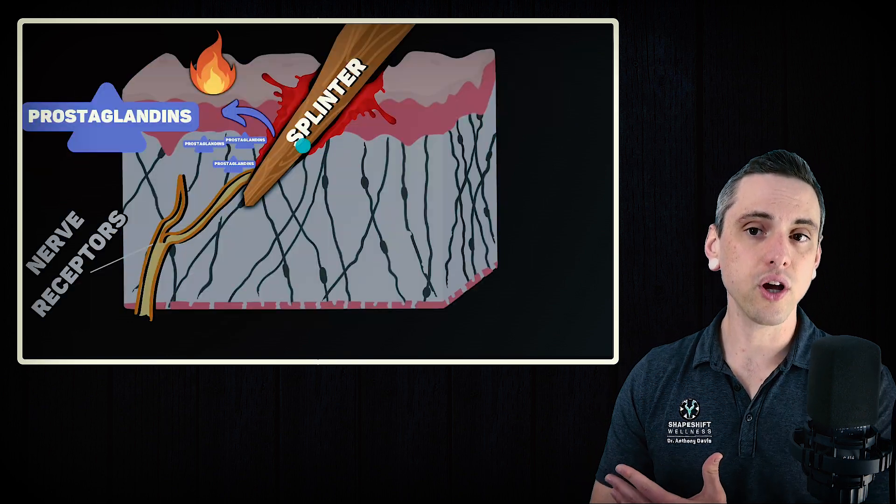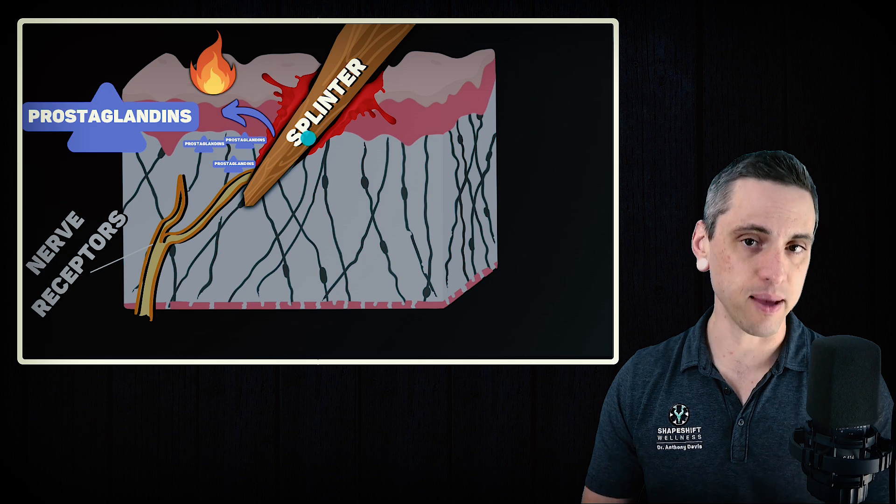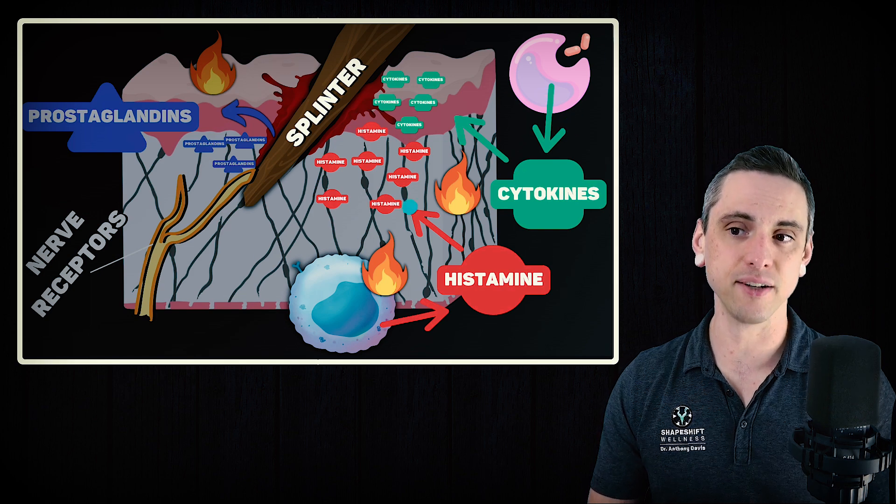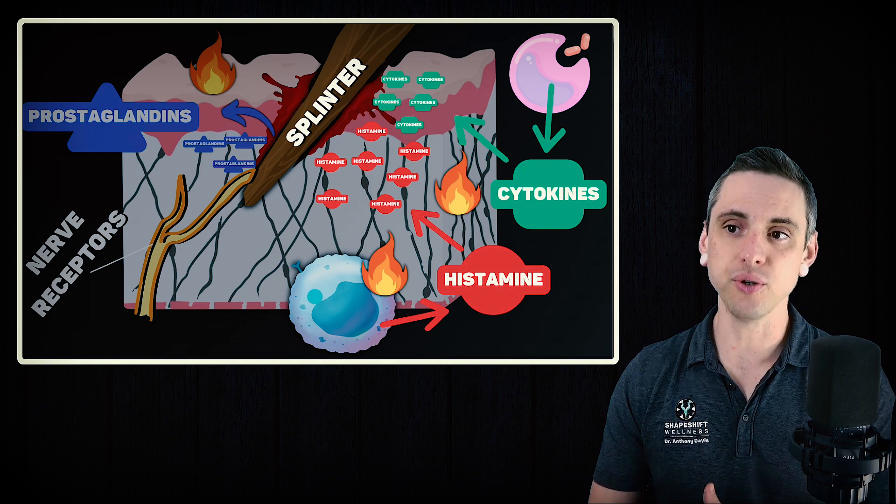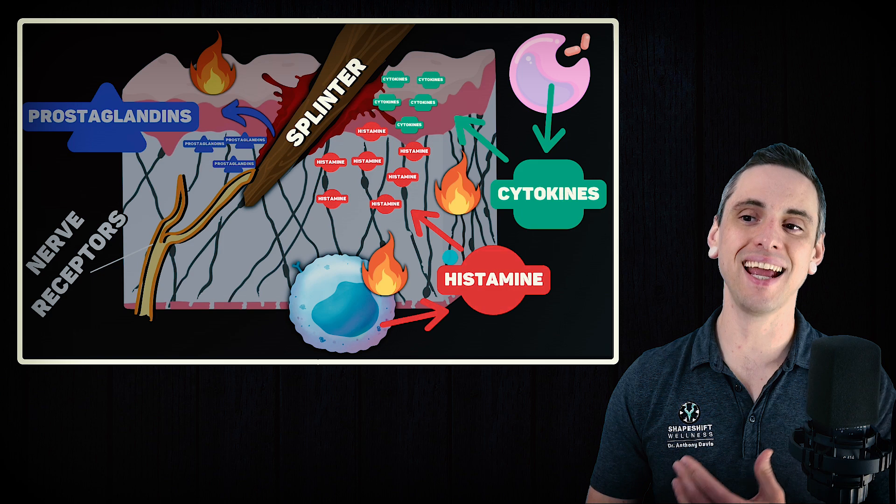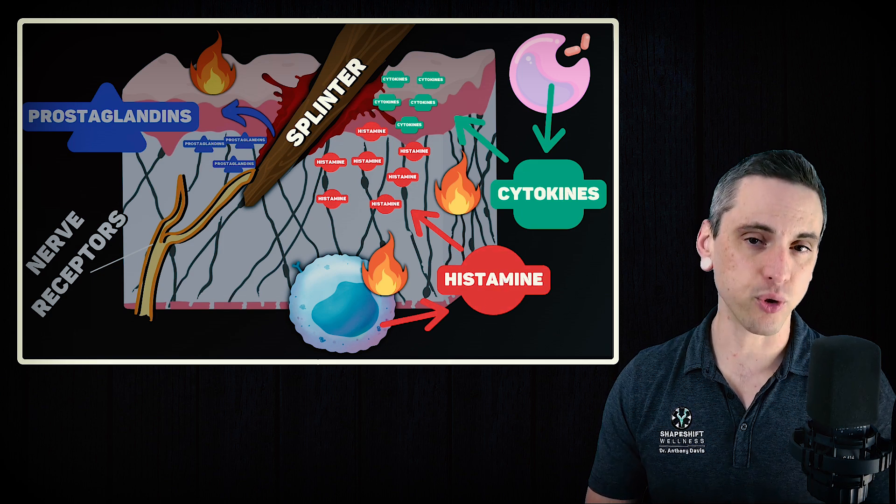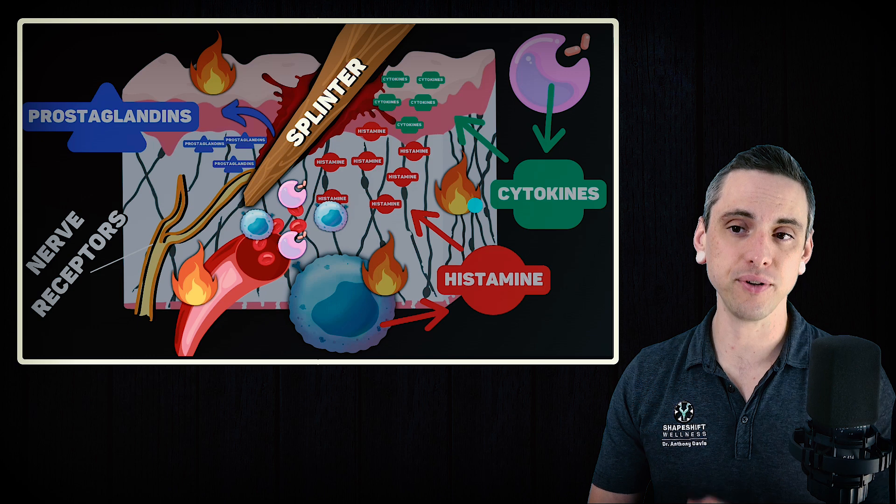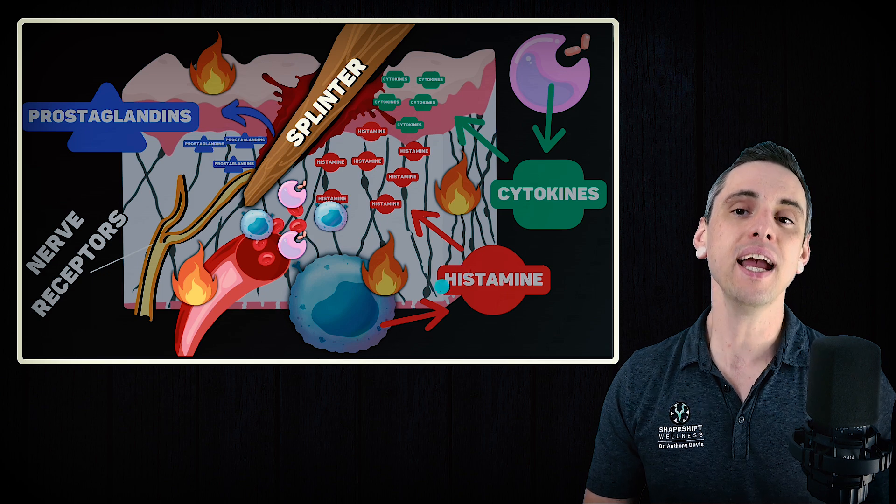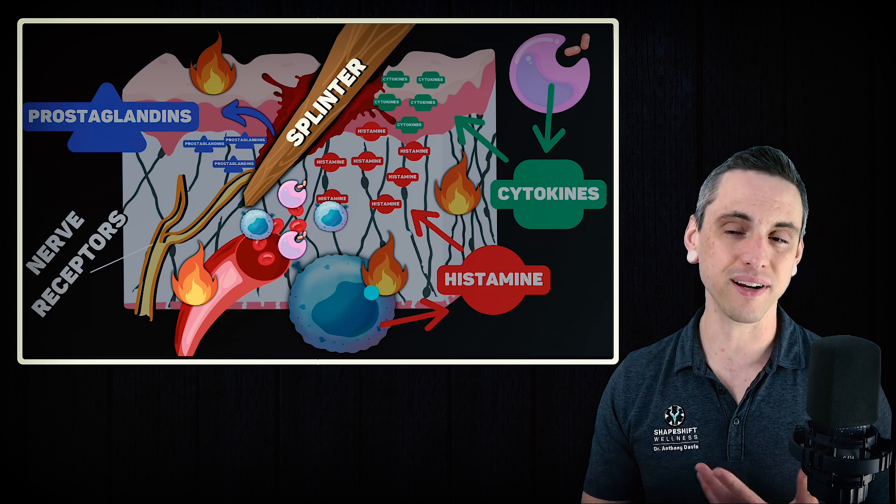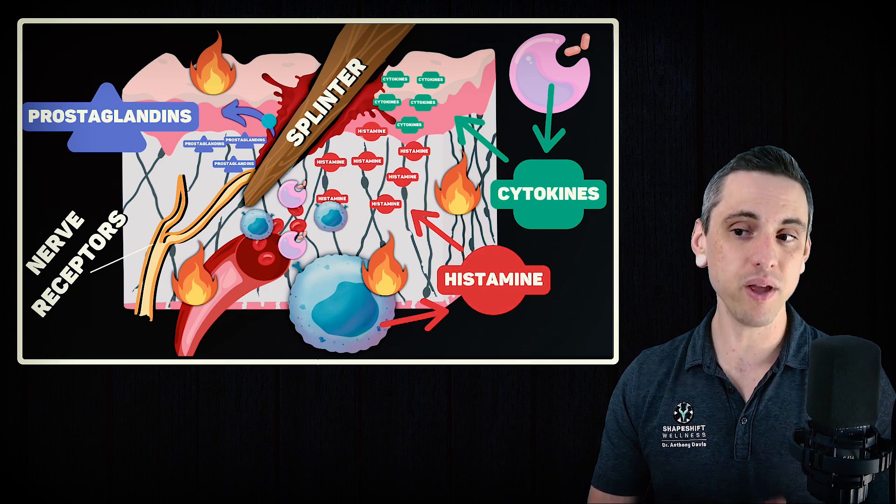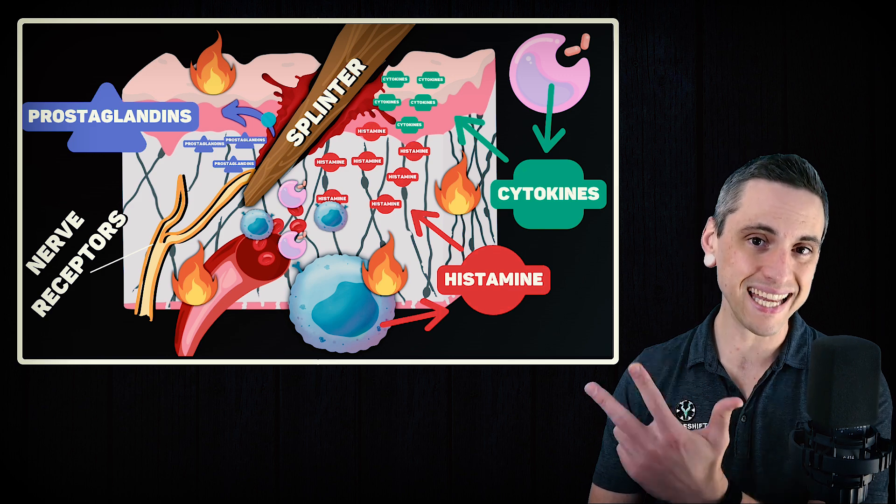The damage to the tissue from the splinter would release prostaglandins and other chemicals into the area, which lead to inflammation. Inflammation means that immune cells like mast cells and macrophages would rush to the area to try to help repair the damaged tissue and fight infections. And these cells would release cytokines and histamines and other inflammatory mediators. This would increase the blood flow to the area, bringing even more immune cells, which would release more cytokines, more histamine, and then further the cycle, the inflammatory cycle or cascade.